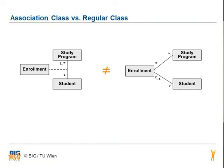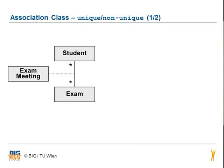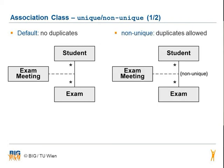Note that there is a difference between an association class and a regular class. In the left example, a student can enroll for one particular study program only once, whereas on the right-hand side the student can have multiple enrollments for one and the same study program. The association class contains no duplicates by default — a student can only be granted an exam meeting for a specific exam once. If you want to allow duplicates, you have to define it as non-unique, then a student can have more than one exam meeting for a specific exam.